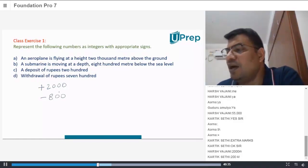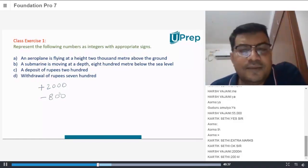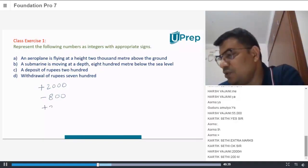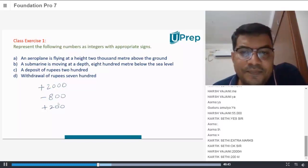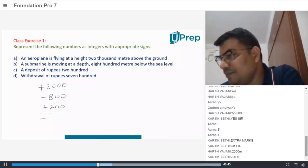Very good. A deposit of rupees 200. Plus 200, very good. Withdrawal of rupees 700. Minus 700.